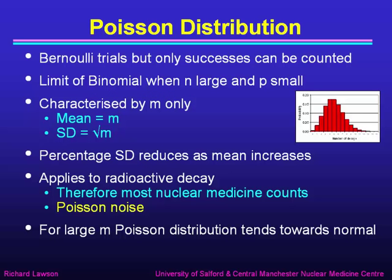Then we looked at the Poisson distribution. That also is a result of Bernoulli trials, but only successes can be counted; we don't care about the number of failures. It's the limit of the binomial distribution when n is large and p is small. It's characterised by the mean value m only — you don't need to know the details of n and p. It has a mean value m and a standard deviation equal to the square root of the mean.